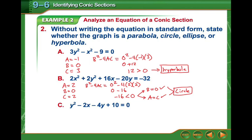Then our last one. There's nothing in front of x squared, so A is zero. There's no xy, so B is zero. And there's a one in front of y squared, so C is one.